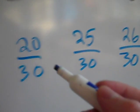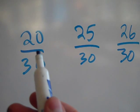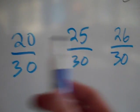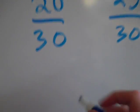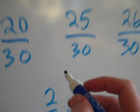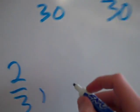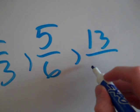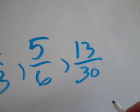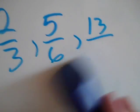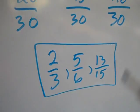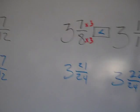Now that I've rewritten all of these, I can order them based on their numerators: twenty, twenty-five, twenty-six — hey, these are already in order! Starting with the smallest: two-thirds, then five-sixths, then thirteen-fifteenths. They won't always already be in order, so be careful. So there you have it — that's how you order fractions and how you compare fractions using common denominators.